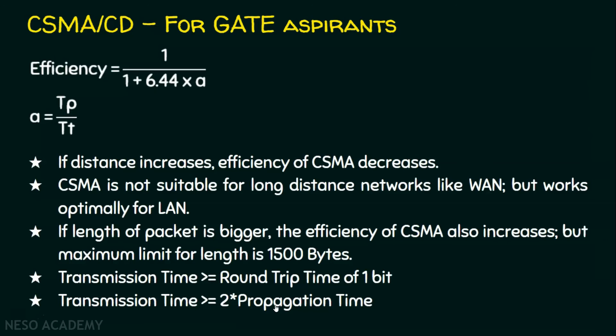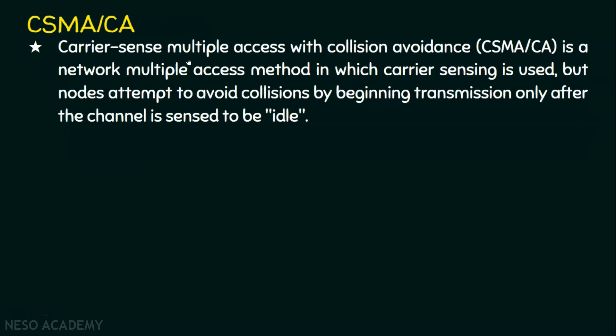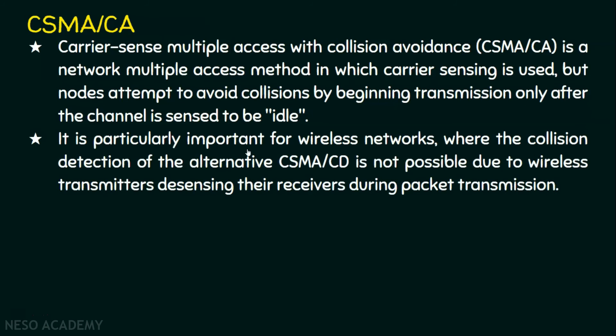Now let's move on to CSMA/CA. CSMA/CA stands for Carrier Sense Multiple Access with Collision Avoidance. It is a network multiple access method in which carrier sensing is used, but nodes attempt to avoid collisions by beginning transmission only after the channel is sensed to be idle. In CSMA/CD, stations transmit first and then detect collision after it happens. In a wireless environment, collision detection is not possible, so wireless technologies use collision avoidance — ensuring collision does not happen before transmitting.